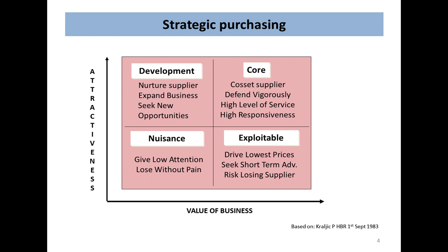Most buying directors use a version of this matrix. The vertical axis shows attractiveness — or differentiation — high and low, while the horizontal axis shows we buy a little on the left versus we buy a lot on the right. One buying director told us he had 1,300 suppliers and only 10 buyers, yet only 13 of those 1,300 — just 1% — he considered core and fundamental to his business.